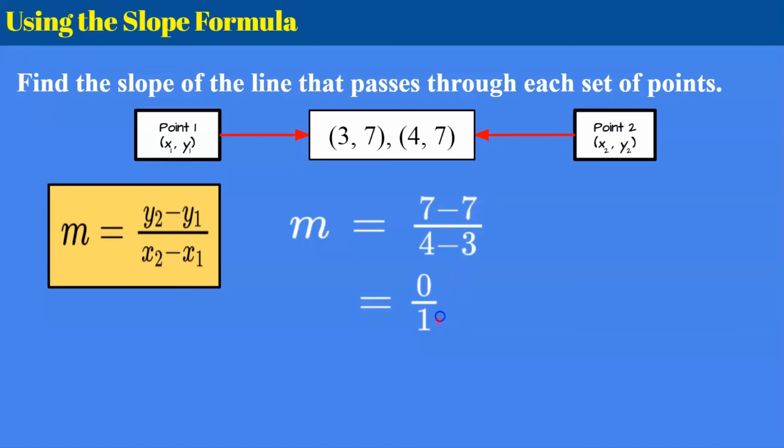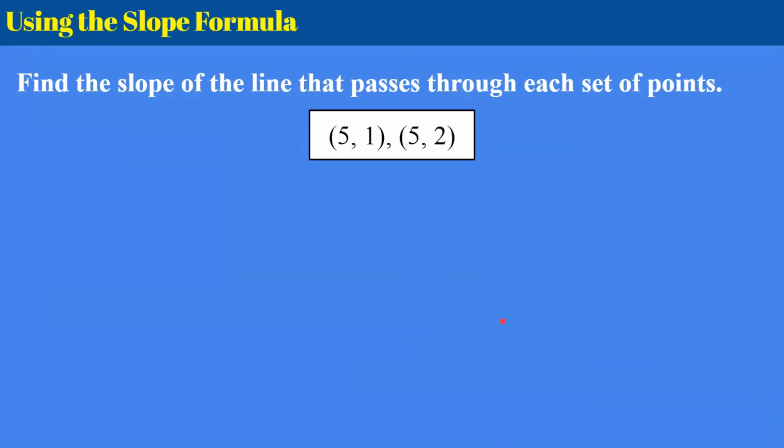Here's another mistake students often make. Use your calculator if you can but 0 divided by 1. If I have nothing and I divide it by 1 I still have nothing. So 0 divided by a number any number is 0. Students often confuse this with dividing by 0. But if you have nothing and you try to divide it into groups you still have nothing. So the slope of my line is 0 and this would be a horizontal line. If you haven't learned that you will learn that soon enough.